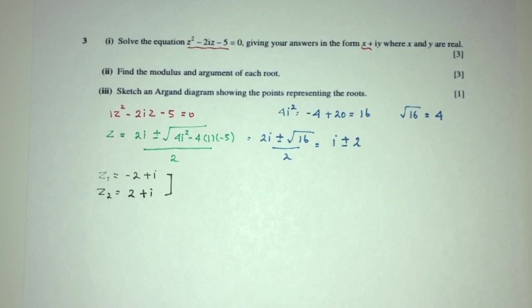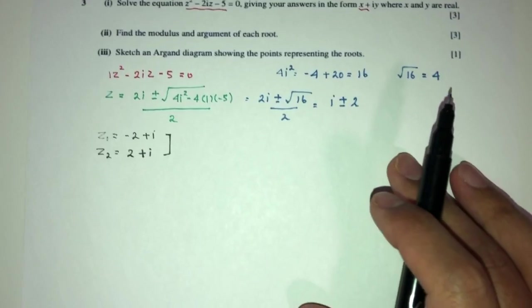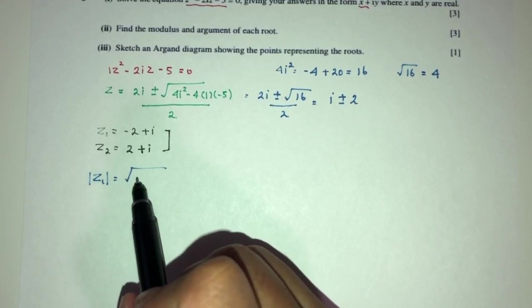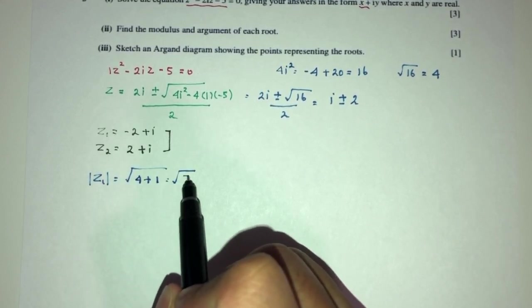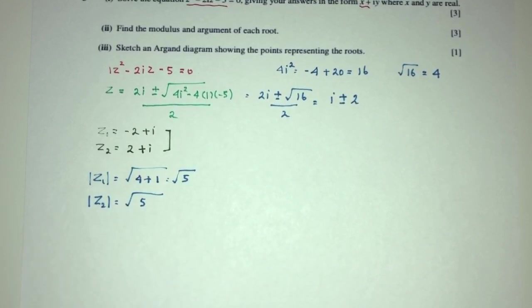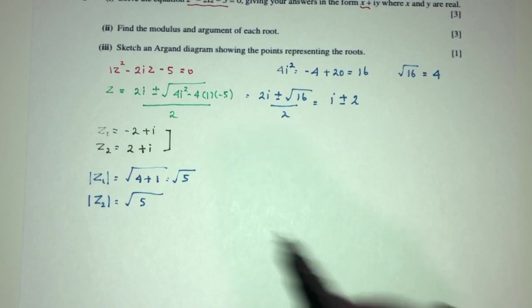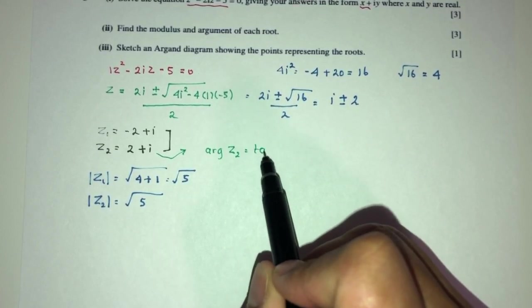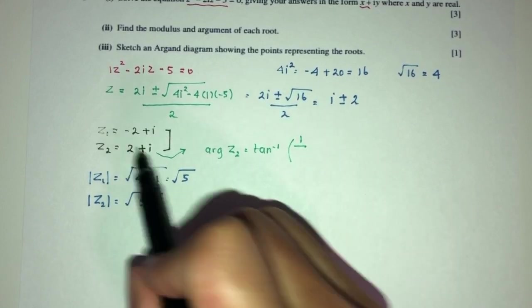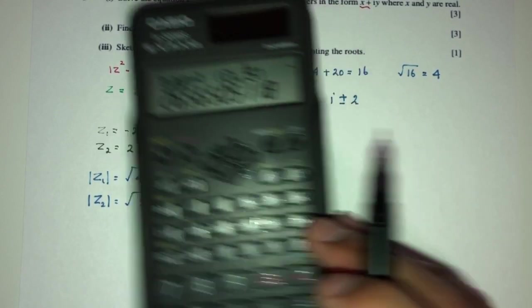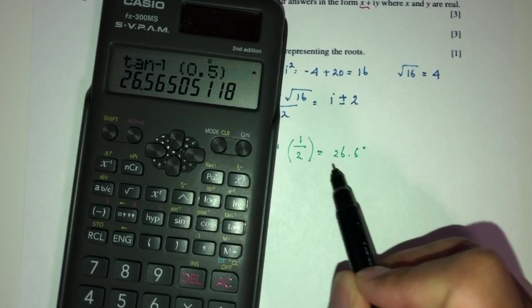For part 2, we find the modulus and argument of each root. The modulus of z₁ = √(4 + 1) = √5, and the modulus of z₂ = √(4 + 1) = √5 as well — both have the same modulus. For the argument of z₂, it is tan⁻¹(1/2) = 26.6°.